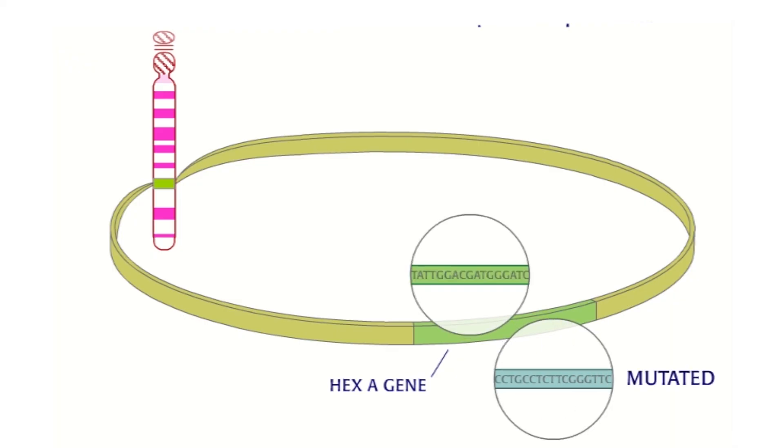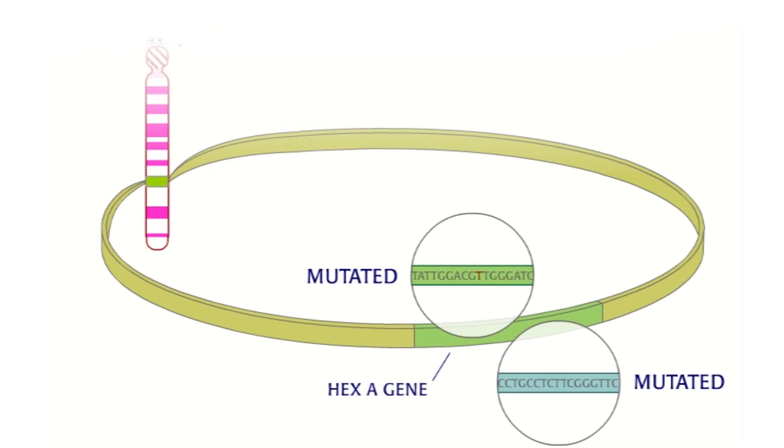Teenagers and adults with Tay-Sachs have hex A protein that works but not very well. Their symptoms and the progression of their Tay-Sachs can vary depending on their hex A activity.